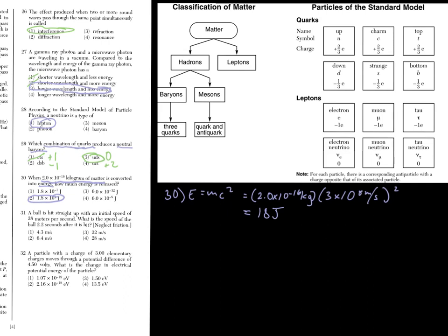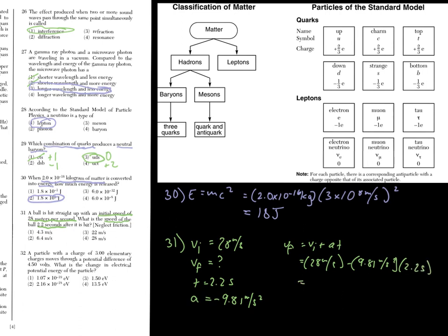Number 31. A ball is hit straight up with an initial speed of 28 meters per second. What is the speed of the ball 2.2 seconds after it is hit? This is kinematics right here. Straight up speed. We're looking for the final velocity after it is hit 2.2 seconds. So for this, we know that our initial velocity is this. 28 meters per second. What is the speed of the ball after 2.2 seconds? Now, because we're going vertical, our acceleration is the acceleration due to gravity, but it's going to be negative because we're slowing down going upwards. So, what equation fits this? It's going to be this one. Plug and chug. It's going to be about 6.4 meters per second. Choice two.